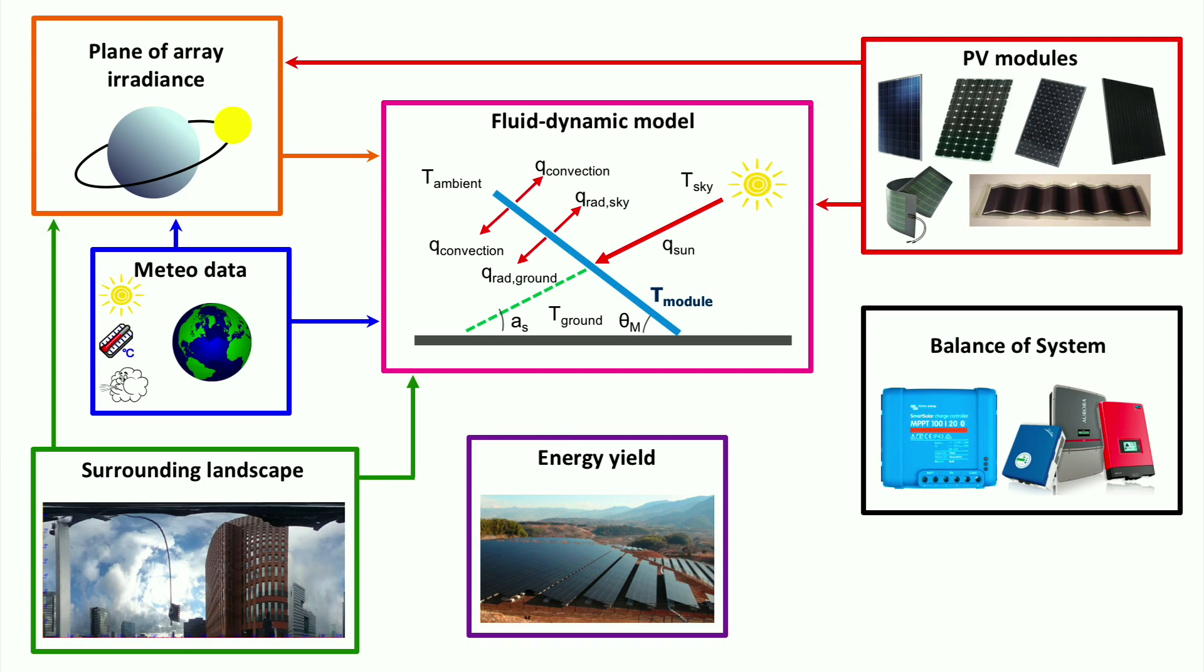The power output of the system can be calculated by taking into account the DC power output of the modules, the performance of the balance of system components, and the modular shading of modules in a PV system.